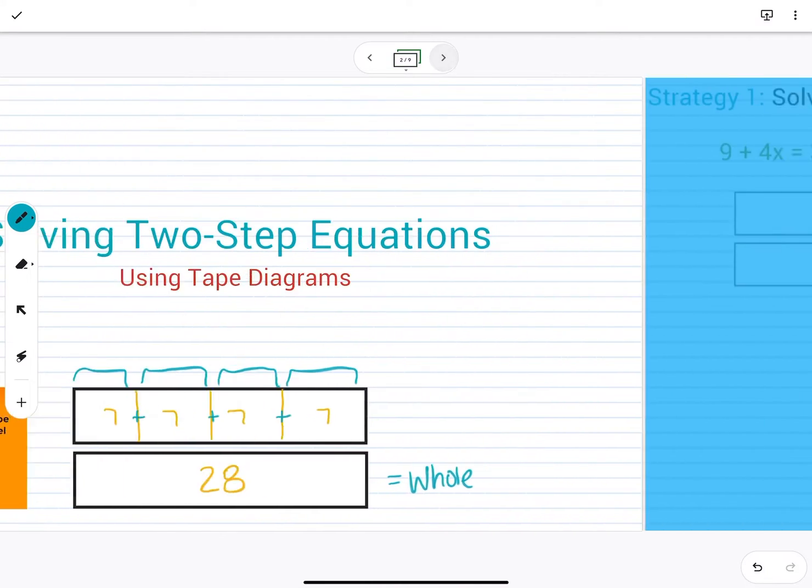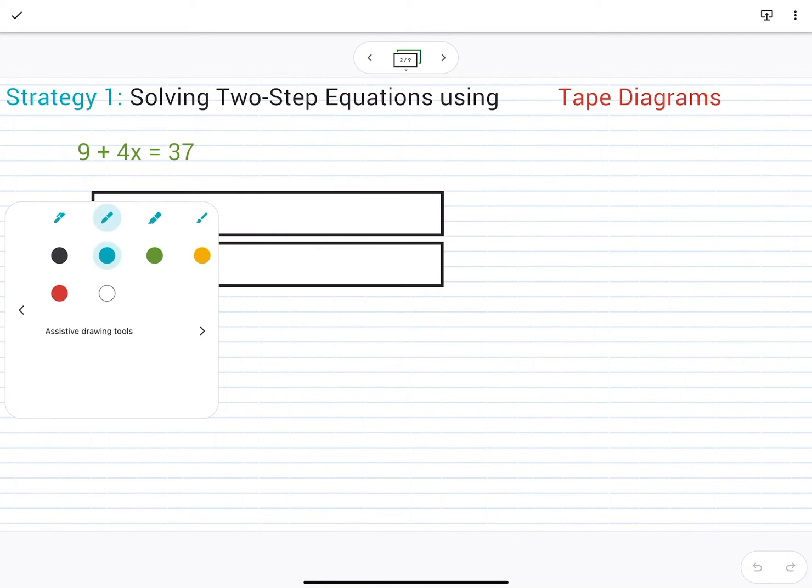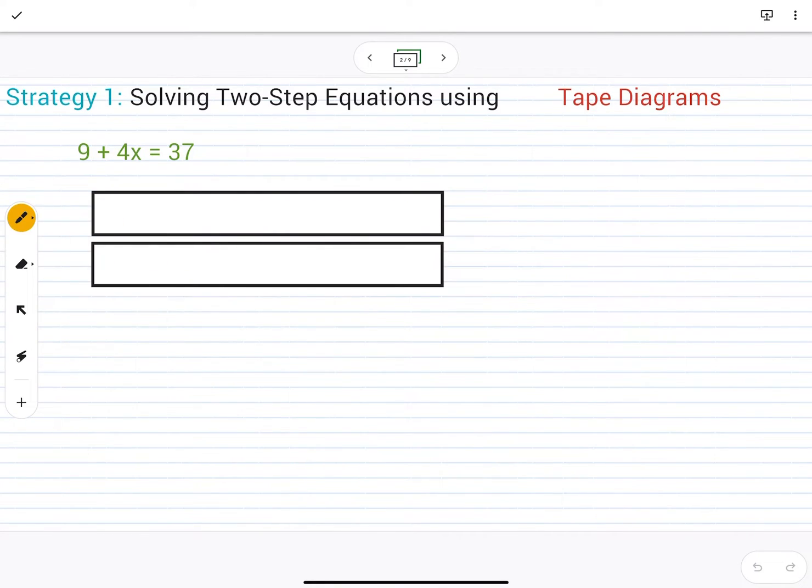Now, let's see how we use this tape diagram to solve a two-step equation. So here's my two-step equation, 9 plus 4x equals 37. And remember, the goal is to isolate the variable. It's to figure out the unknown. What number represents x in this equation to make it true?